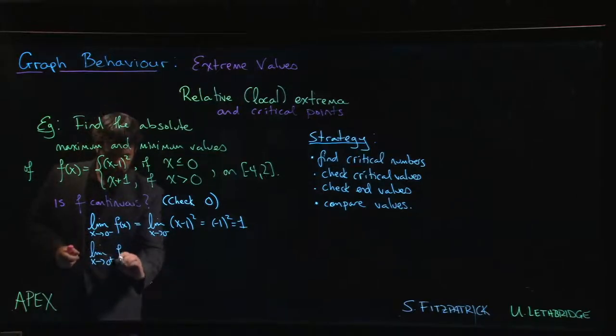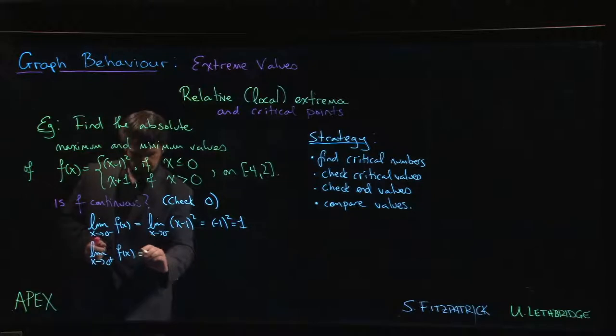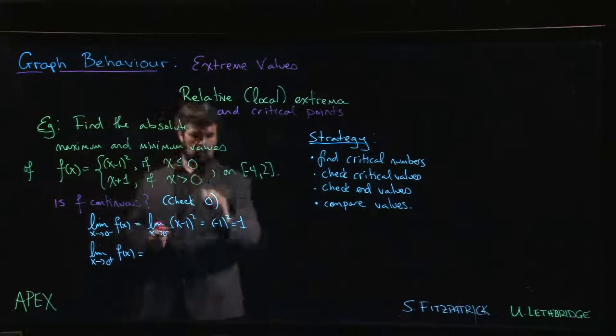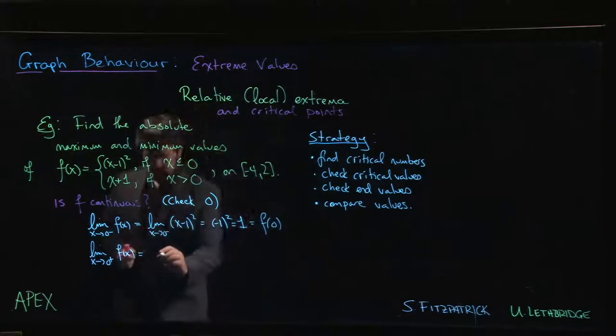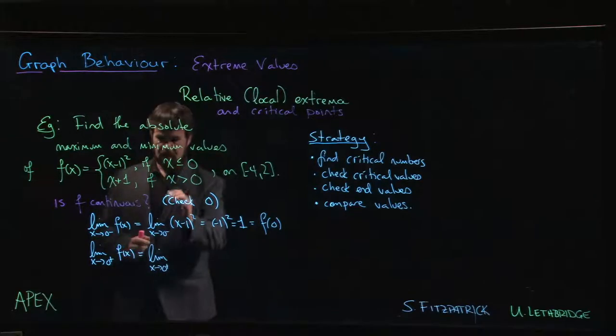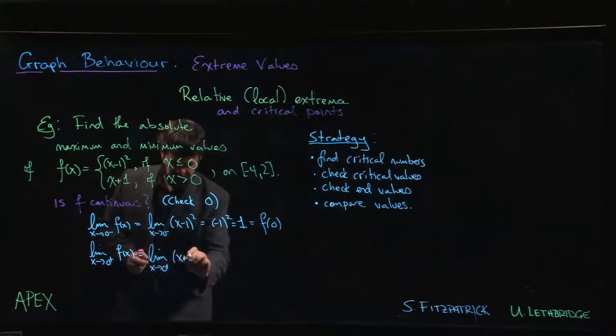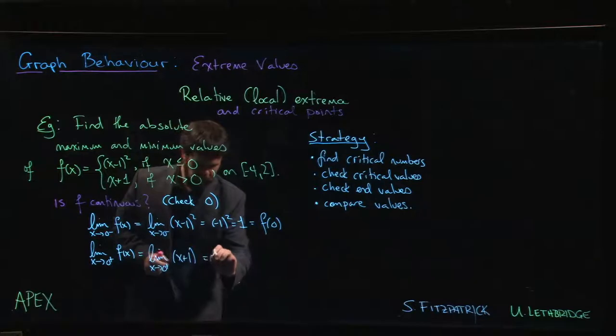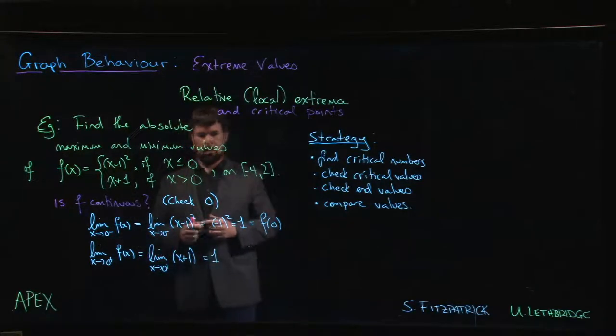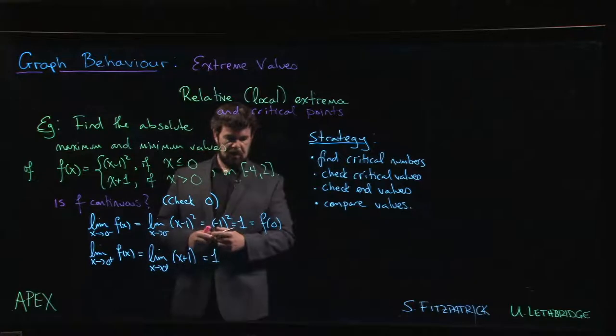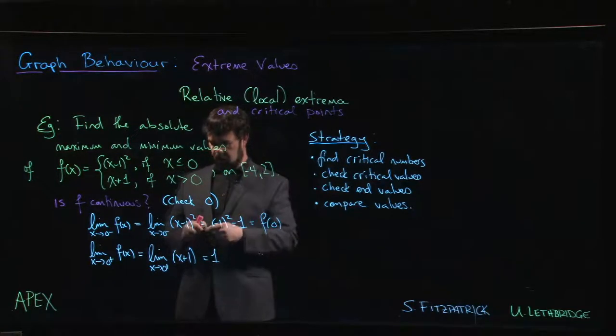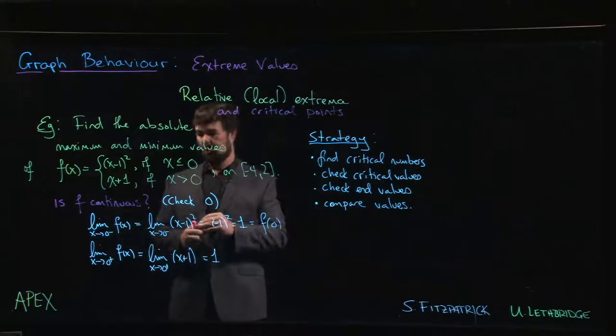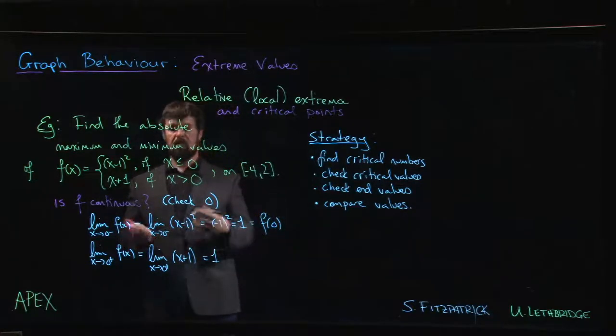And if we're approaching from the right, and by the way this is also of course f of 0 because we see the equal sign there, for the right-hand limit we have the limit as X close to 0 of X plus 1, also equal to 1. So that means that the limit exists, it's equal to 1, equal to f of 0. So yes, the function is continuous.